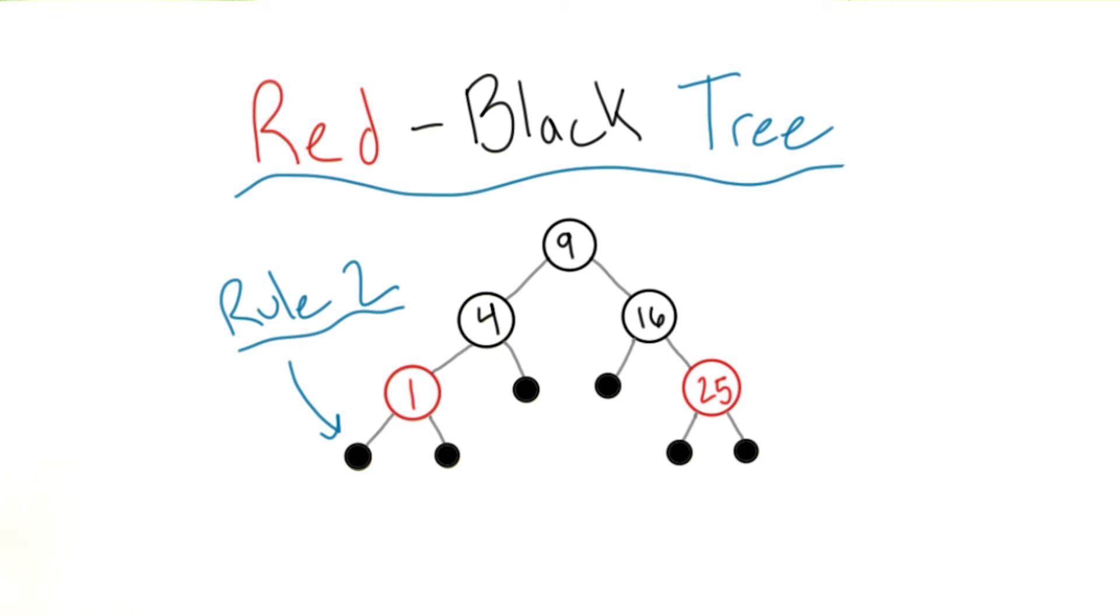The second property of a red-black tree is the existence of null leaf nodes. Every node in your tree that doesn't otherwise have two leaves must have null children. As you can see, all null leaf nodes must be colored black.